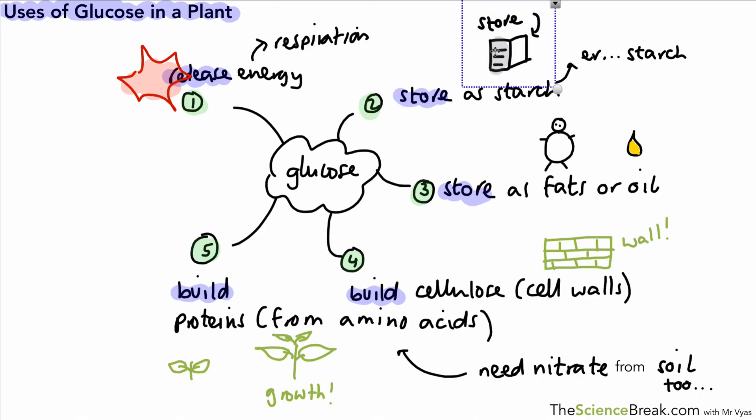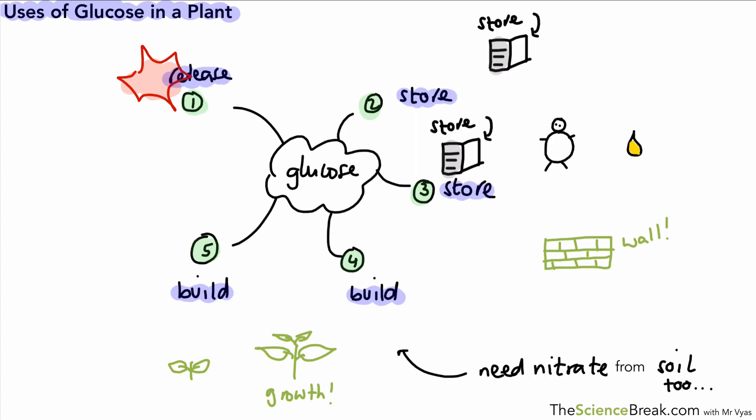So we could probably go over it just one more time, just with the images and just a couple of key words. So those images should help you remember that it was number one, the release of energy; two was store as starch; number three, my favourite one, store as fats and or oils; number four was building a cellulose wall; and number five was building proteins with amino acids.